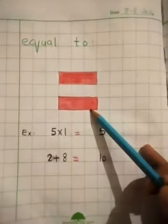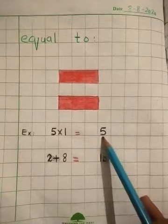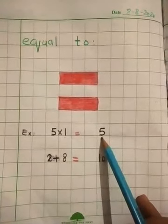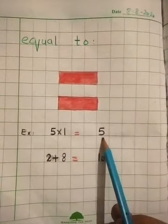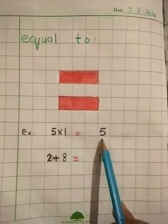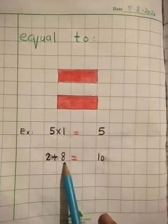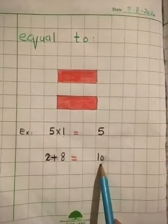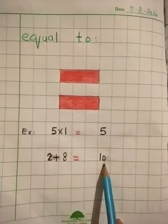This is the sign of equal to. In equal to signs, both sides have the same values. Here you can see 5 ones are 5, and here is also 5. So both sides have equal values. 2 plus 8 is equal to 10, and here is also 10. So both sides have equal values.